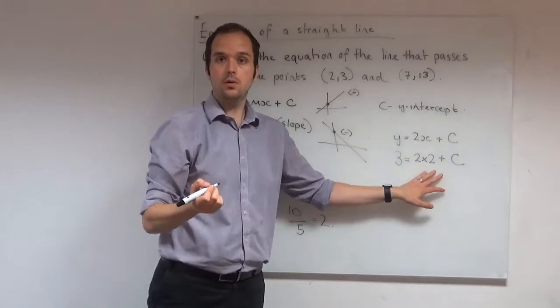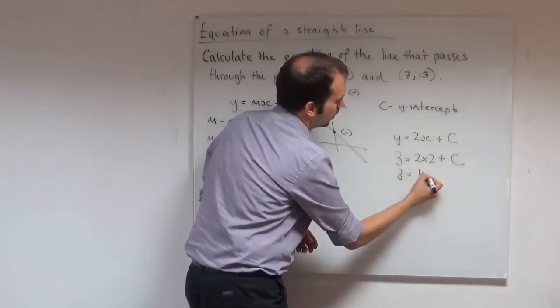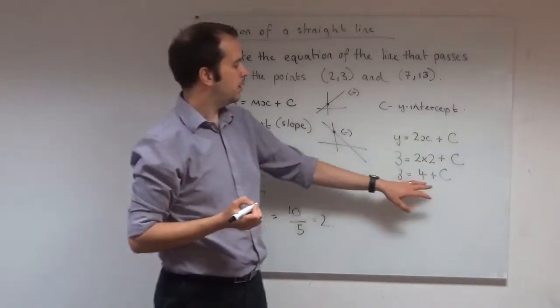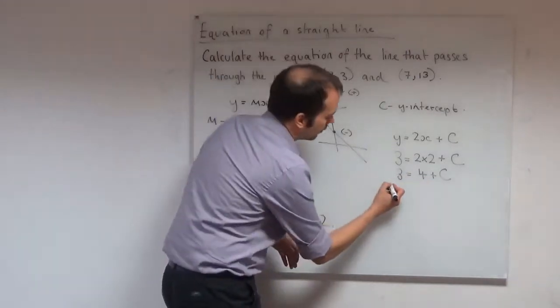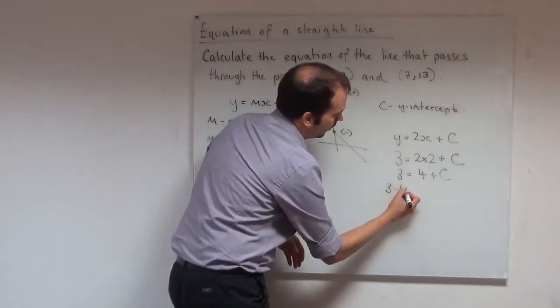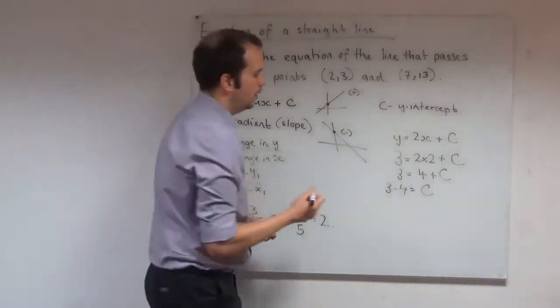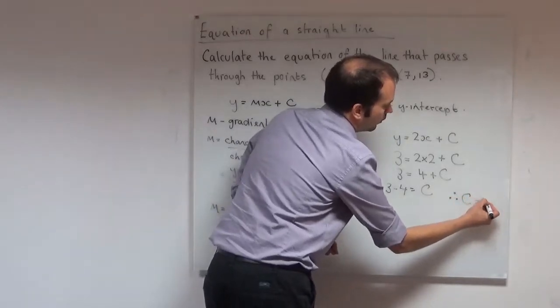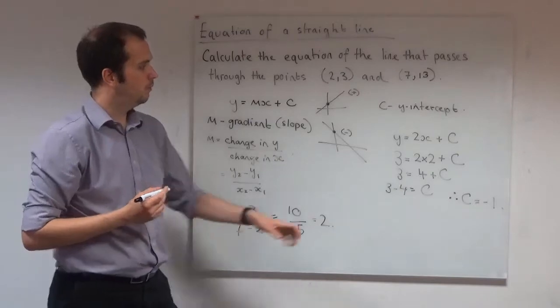Well, 2 times 2 is 4. So we have 3 is equal to 4 plus c. And to get c on its own, I need to subtract 4 from both sides. So I'll have 3 minus 4 is equal to c. Therefore, I find c is equal to minus 1.